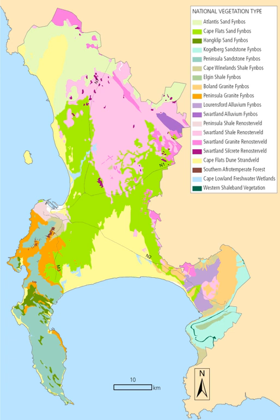Endemism. Of the thousands of plant species that are indigenous to Cape Town, 190 are known to be endemic to the city, occurring nowhere else in the world. In addition, there are over a hundred animal species that are also restricted to the city. Endemic plant species include the following.